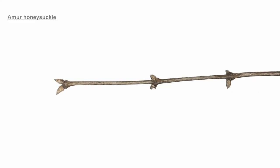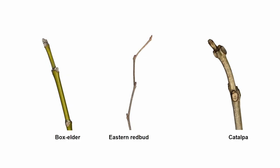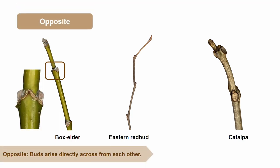Now that you know how to identify apical and lateral buds and are familiar with bud scale arrangements, let's look at nodes and internodes. A node is where buds attach to the stem. An internode is the space between two nodes. Buds can be arranged on the stem of a twig in two common fashions. The first arrangement is opposite.